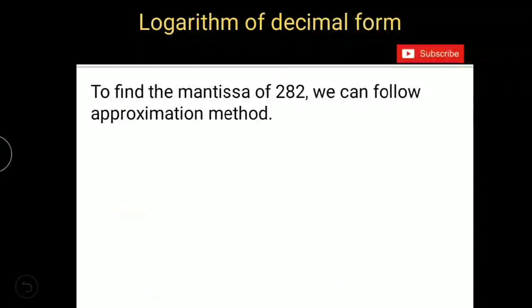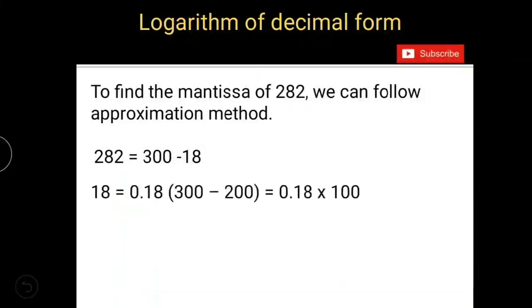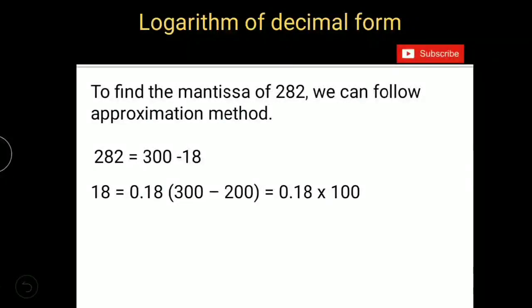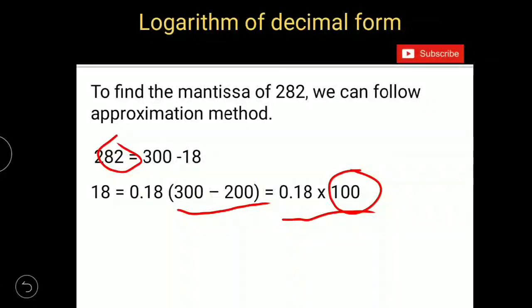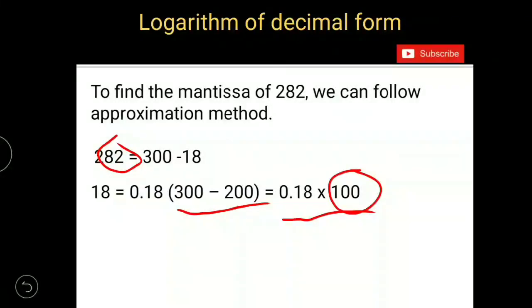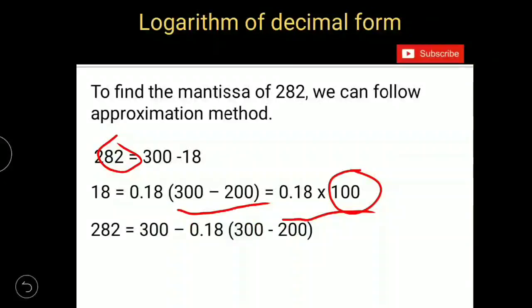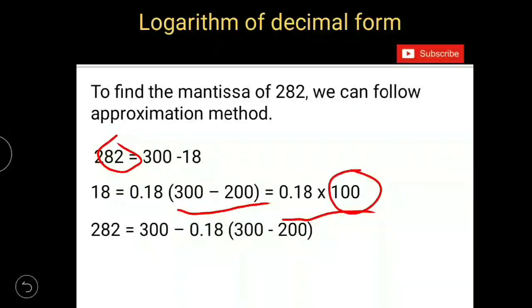And to find mantissa of 282, we will follow approximation method like this. 282 is close to 300, it can be written as 300 minus 18. And 18 can be defined as 0.18 into 100. Where from this 100 has come? 100 can be written as 300 minus 200. And why did we take 300 minus 200? Because 282 is present in between 300 and 200. So difference between 300 and 282 is 18, and 18 equals 0.18 into 100. This 100 can be written as 300 minus 200.